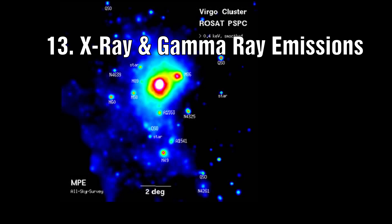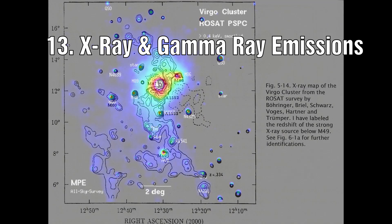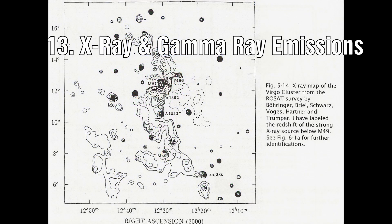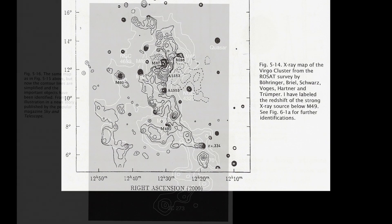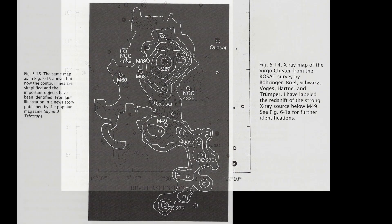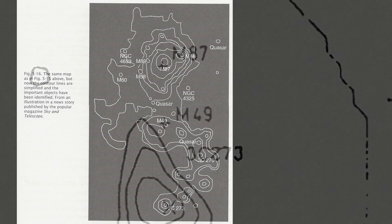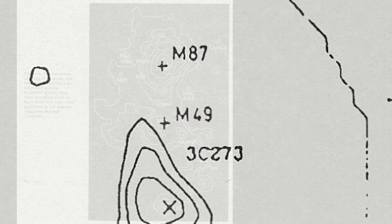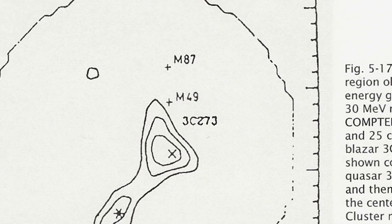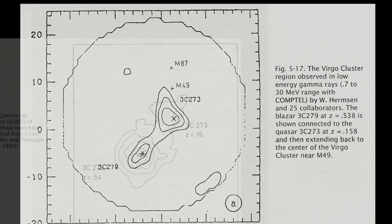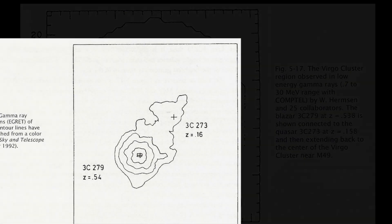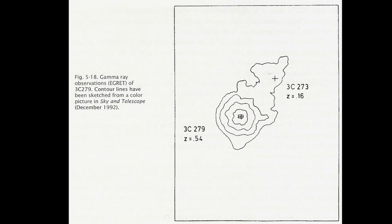Number 13: Examination of both the X-ray and gamma ray emissions from the main quasars in the Virgo cluster reveals a large structure that seems to connect them together. Some of the highest gamma ray energy comes not as a point source from these objects, but instead from a very diffuse area surrounding them.